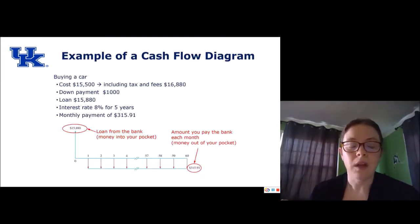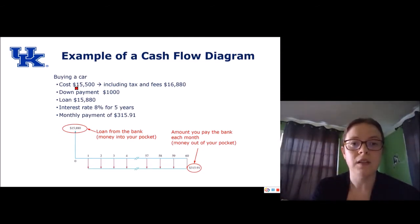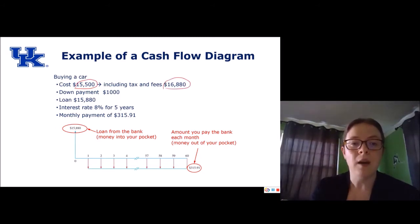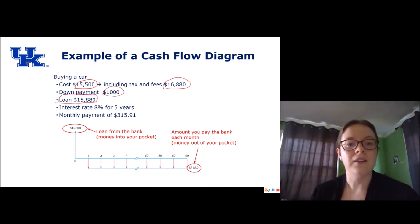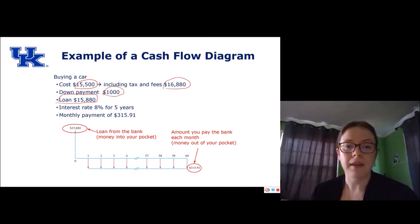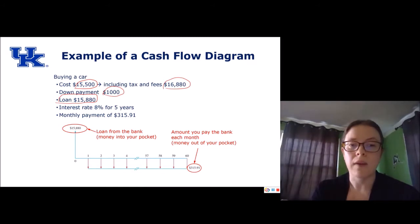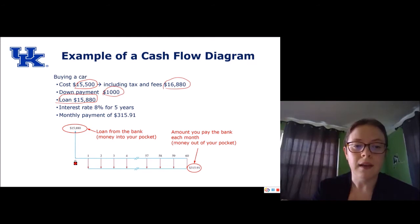Here's an example — buying a car. The cost of the car is $15,500. With tax and fees it comes to $16,880. We put in a down payment of $1,000 and take out a loan of $15,880. Our interest rate is 8% over five years and our monthly payment is $315.91. So this is an example of our cash flow diagram. We have a timeline that starts at zero, and the numbers here represent the months that we're making payments — from one month to 60 months — because we're looking at five years.